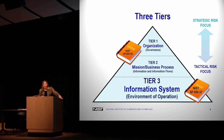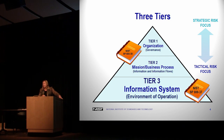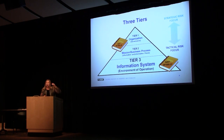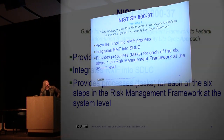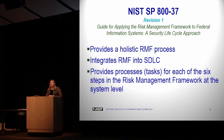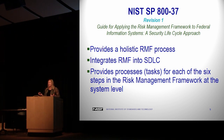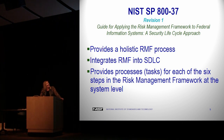SP 800-37 — just as a reminder, we have three tiers. The information we get by doing the Risk Management Framework at the system level should flow upward toward the other tiers. SP 800-37 Revision 1 is a holistic risk management process. It's not focused on compliance or any one step — all six steps in the process work together and all need to be done to have good risk management in place for your systems.